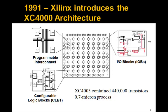In 1991 they introduced the 4000 architecture, and this shows what the chip looks like. It's an array of configurable logic blocks, or CLBs. Around the edge there are I/O blocks. These CLBs are connected with switches and wires inside the chip, so you can connect the output of one CLB to the input of any other one on the chip.